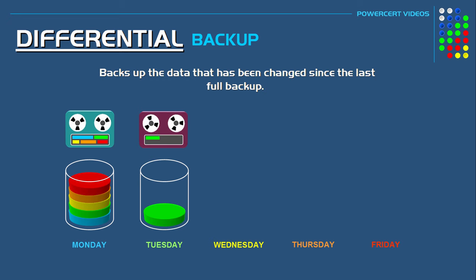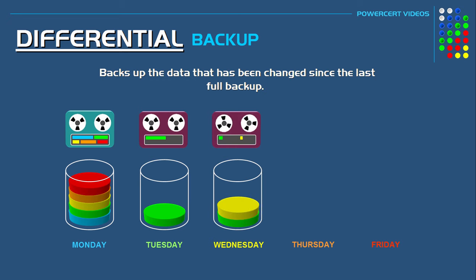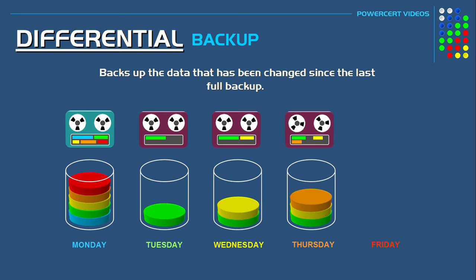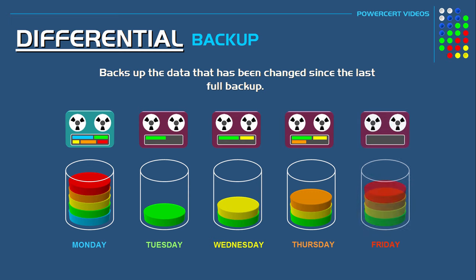So Tuesday will back up Tuesday's data. Wednesday will back up Tuesday's and Wednesday's data. Thursday will back up Tuesday's, Wednesday's, and Thursday's data. And Friday will back up Tuesday's, Wednesday's, Thursday's, and Friday's data. As you can see in this illustration, each backup tape copies data not only from its own day, but also from the previous weekdays since the last full backup was performed.